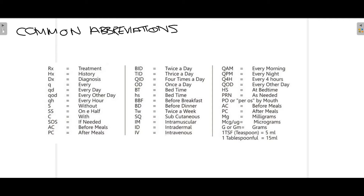Before going into further detail, some common abbreviations are to be noted. Rx simply means recipe, which refers to treatment — after Rx, the details of the medicine are written down. Hx means history, Dx means diagnosis. Qd means every other day. Bid means using the medicine twice a day. Tid means three times a day, and Qid means four times a day. Sometimes medicines also require once a day dosing, which we write down as OD.